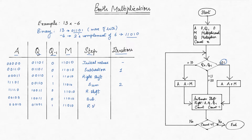As we preserve the most significant bit, or MSB, of register A, we keep it as 0 while shifting. Now, as the highlighted pattern is 1,1, we simply do a right shift without addition or subtraction. This also applies when the highlighted pattern is 0,0, as shown in the algorithm.